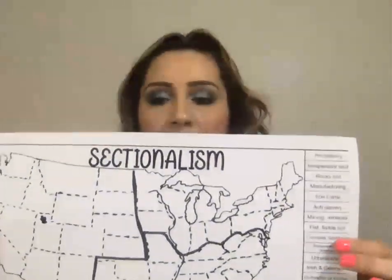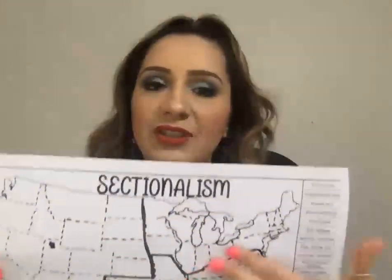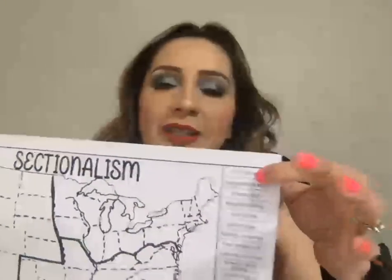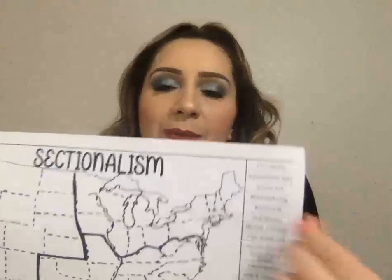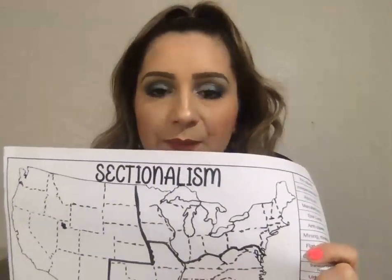This was the activity we were in the middle of — sectionalism. The idea was to color in the different sections of the United States at the time right before the Civil War, and then the kids were going to cut these out, pull them out, and paste them in their appropriate section. So if it was cotton cultivation, they would paste it in the southern section.